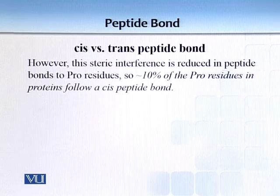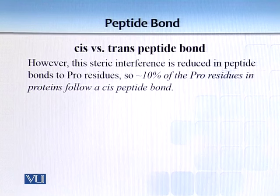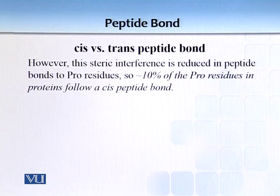However, this steric interference is reduced in peptide bonds involving proline residues. Proline has an imine group instead of an amino group. As a result, around 10% of proline residues in proteins are followed by a cis-peptide bond instead of a trans-peptide bond.